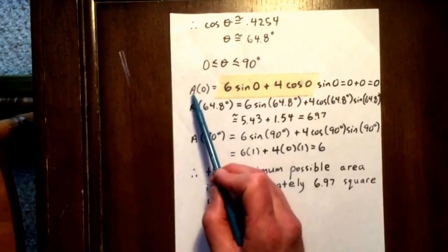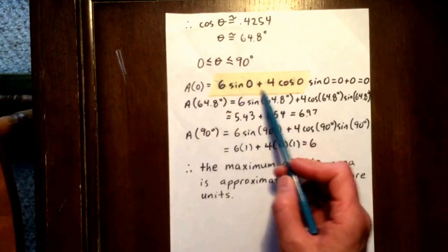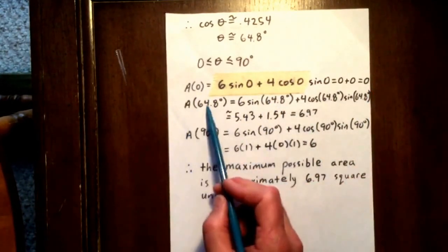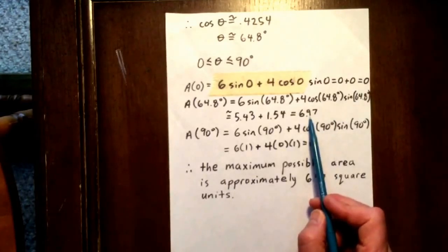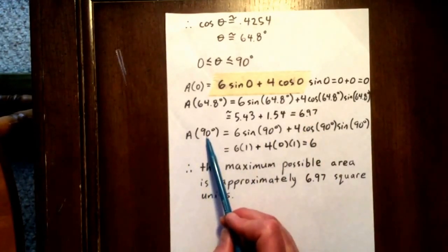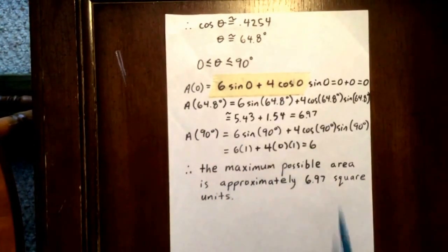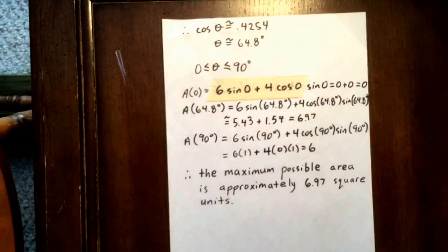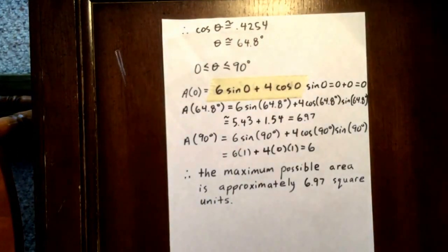We determine the area if the angle is 0, which would be 0. We determine the area if the angle is 64.8 degrees, and that would be 6.97. And we determine the area if the angle is 90 degrees, which would be 6. So we realize the maximum possible area for that trapezoid is approximately 6.97 square units.